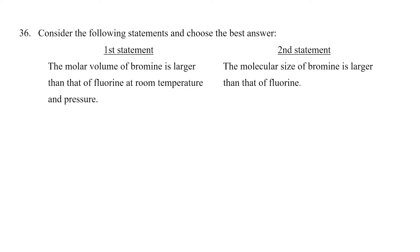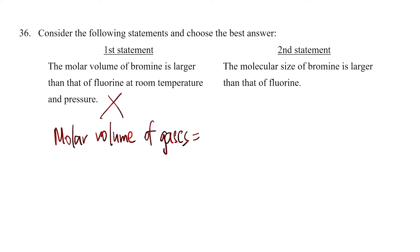Most of you would think this is false immediately because you would assume they're supposed to be the same. You've learned in the topic of rate of reaction — Book 4A — about the molar volume of gases, which is Avogadro's law, and that all gases have a molar volume of 24 dm³. Now this is true for gases. At room temperature, fluorine is a gas, but bromine, as we know, is a liquid.